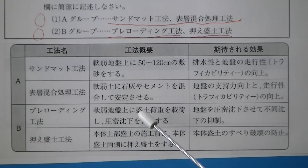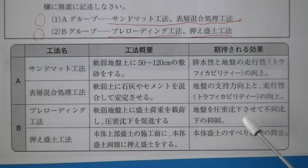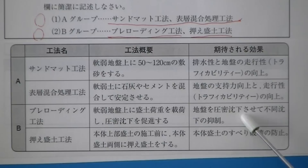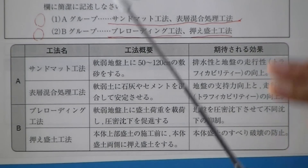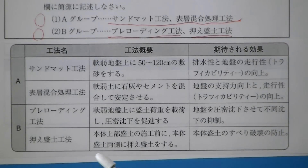プレローディング工法は、軟弱地盤上にあらかじめ盛土をして沈下を促進させ、地盤の強度を高めておく工法です。盛土荷重を載荷して圧密沈下を促進しておく。抑えモリド工法は、盛土が滑っていくのを抑えようとするものです。